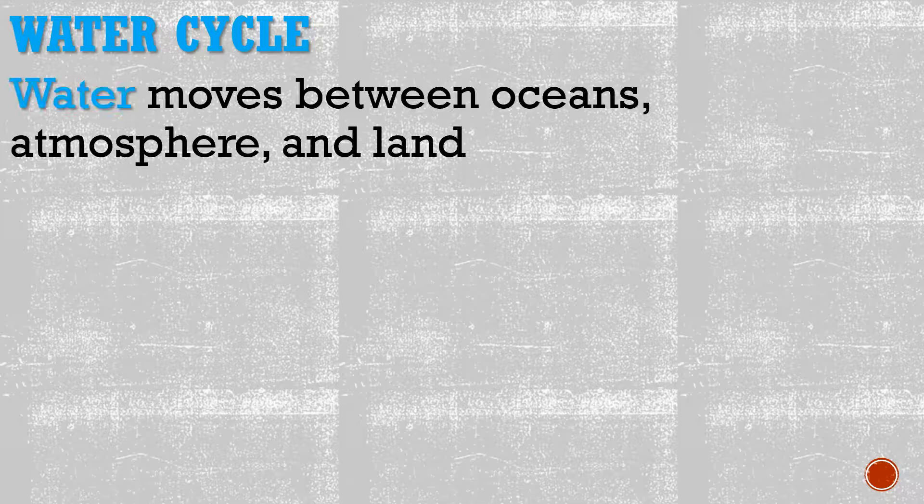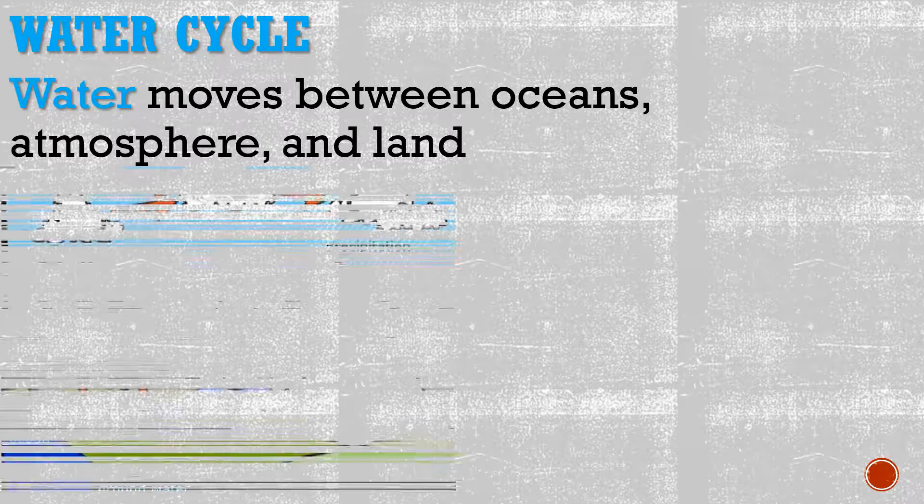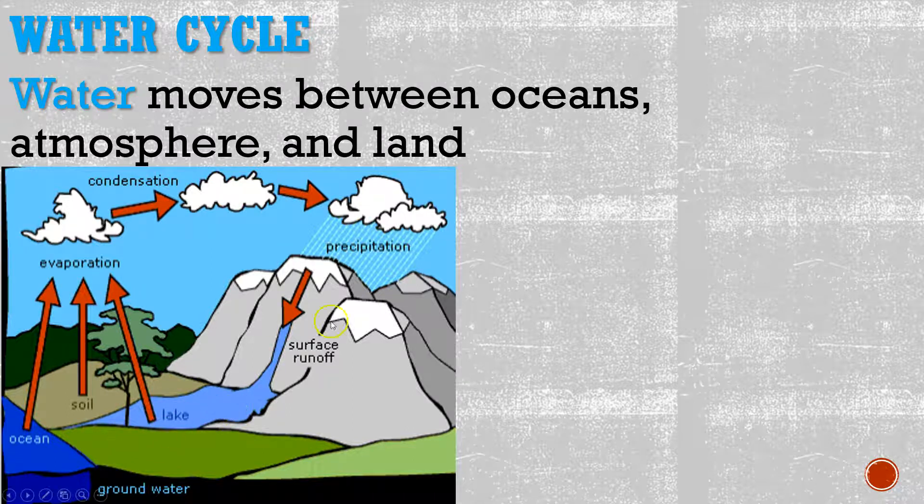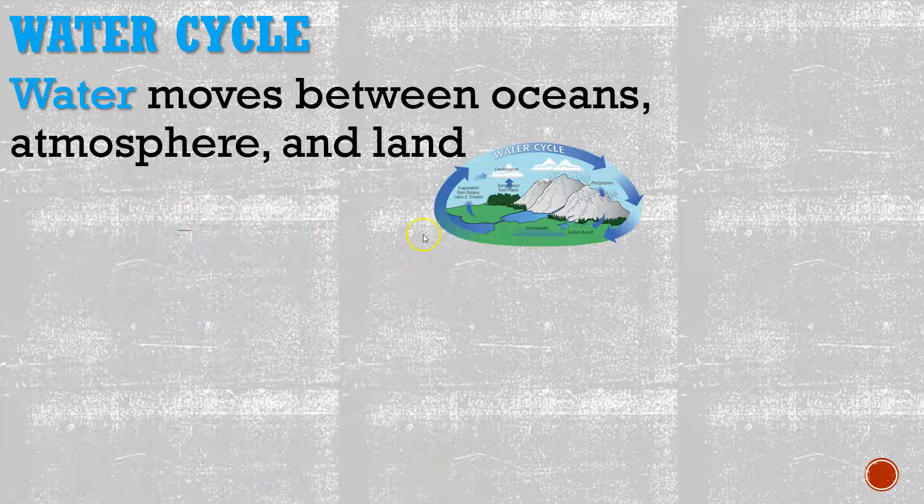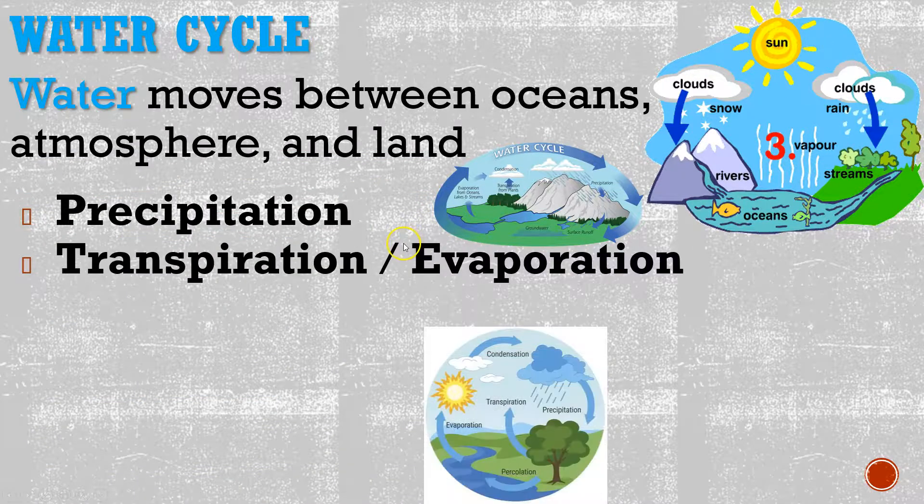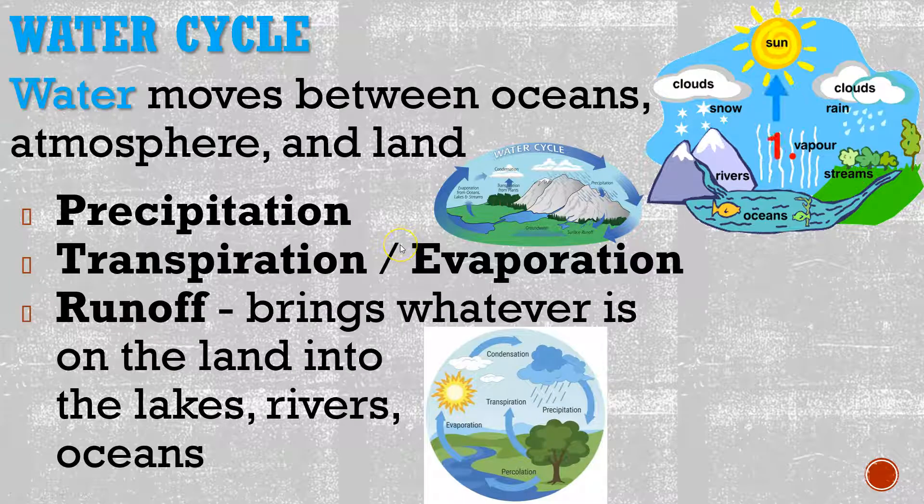So let's start by talking about the water cycle. Water is going to move between the oceans, the atmosphere, and the land. We're going to be having some of the water evaporating, then turning into clouds, then precipitating, and then runoff. Water is never actually used up. We've got precipitation, transpiration or evaporation, and then runoff.